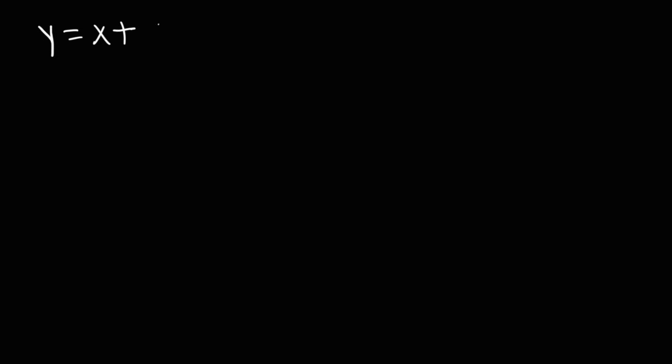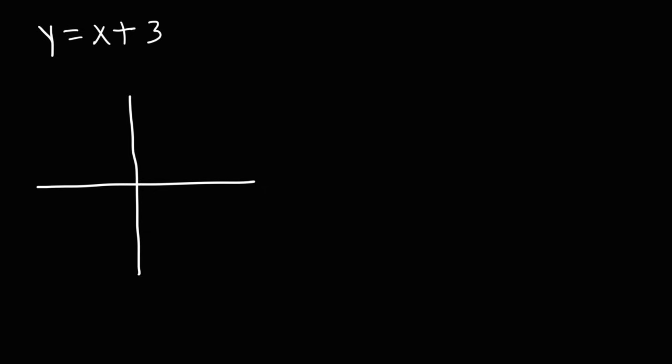In this video we're going to talk about how to find the range of a function. Let's start with a linear function y equals x plus 3. The first thing I recommend doing is graphing the function. This graph is a straight line shifted up three units, so the y-intercept is at 3.